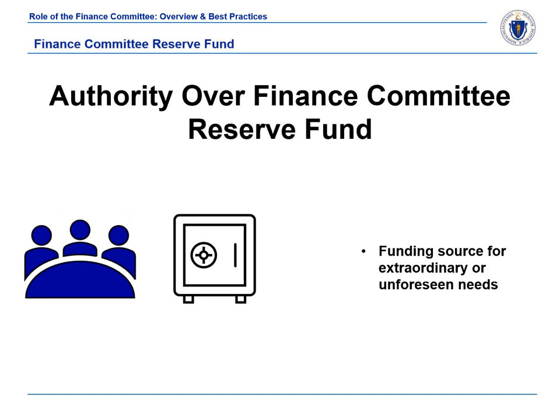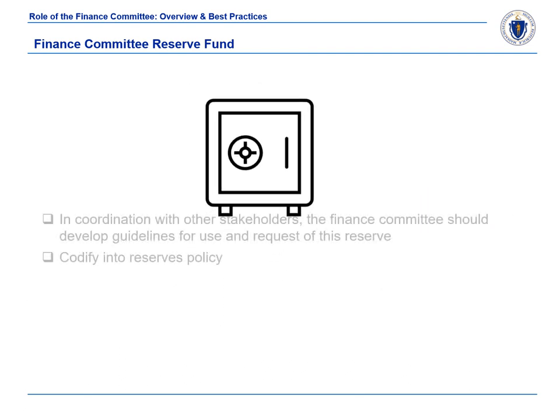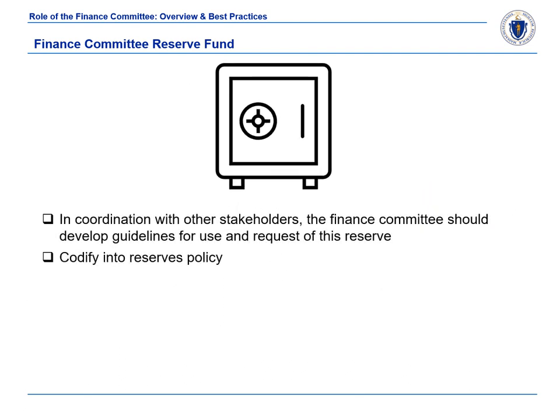Regardless of its town-specific role in the budget process, the finance committee has authority over the reserve fund for extraordinary or unforeseen needs. The finance committee reserve fund is governed by Massachusetts General Laws, Chapter 40, Section 6. This reserve fund is appropriated within a line item of the annual operating budget. The annual amount of the reserve may not exceed 5% of the tax levy for the preceding year. The finance committee, along with other fiscal stakeholders in the community, should develop guidelines for the use and request of the reserve fund.